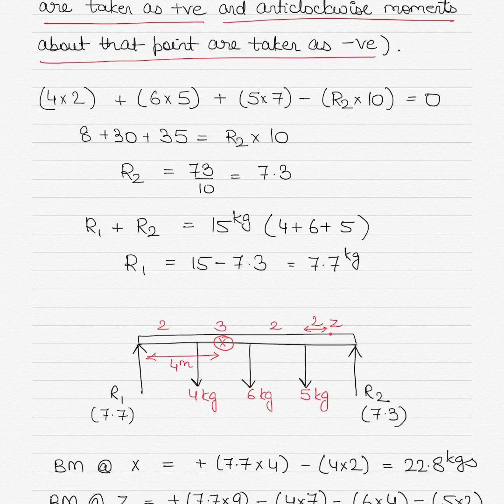So 4×2 + 6×5 + 5×7, and then the last bit becomes negative because it is acting anti-clockwise and not clockwise. So R2×10 = 0.